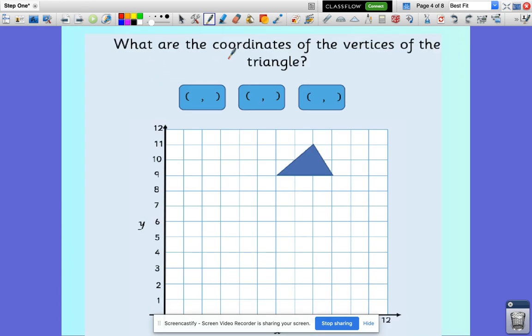So this one asks us, what are the coordinates of the vertices of the triangle? First of all, let's look at this word, vertices, because you're going to come across this a lot. This is a mathematical term for corner. A triangle has three vertices.